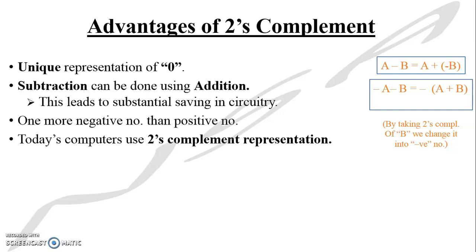The advantages of 2's complement: first, when we look at the 4-bit table, plus 0 and minus 0 are not separate — we have a unique representation of 0, which is not the case in sign-magnitude or 1's complement form. Second, subtraction can be done using addition. The 1's complement can be done with 2's complement, so subtraction can be performed with addition. This leads to substantial saving in circuitry — your hardware is reduced if addition handles both operations.